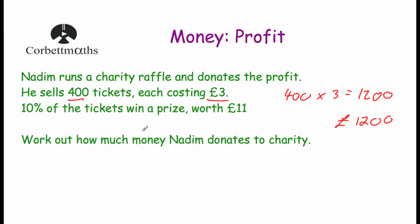Now we need to work out the cost of the prizes. There are 400 tickets altogether and 10% of them win a prize. Remember to work out percentages: to find 50% we divide by 2, to find 25% we divide by 4, and to find 10% we divide by 10. So we take our 400 and divide by 10 — that tells us 40 tickets win a prize. So 40 people win a prize and each prize is worth £11. If we do 40 times £11, we will see how much the prizes cost.